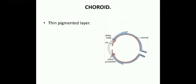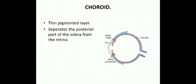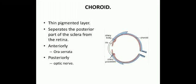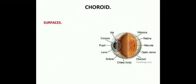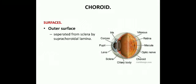The middle coat is made up of the choroid, ciliary body, and iris. The choroid is a thin pigmented layer that separates the posterior part of the sclera from the retina. Anteriorly it ends near the ora serrata, and posteriorly it is perforated by the optic nerve. The ora serrata is the junction between the photosensitive and non-photosensitive area of the retina, present between the limbus and the equator of the eye.